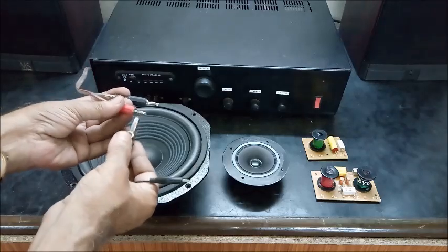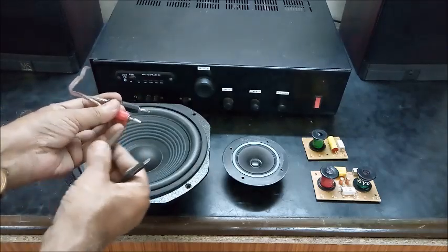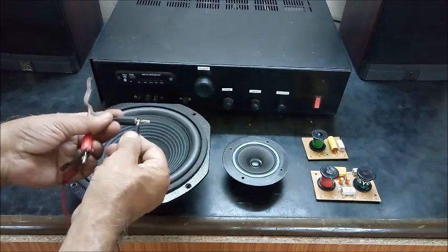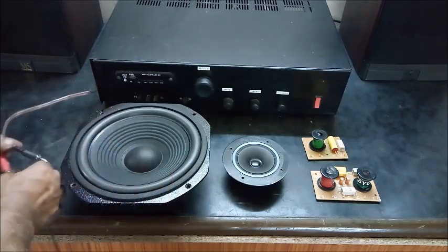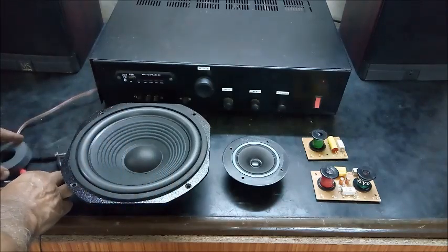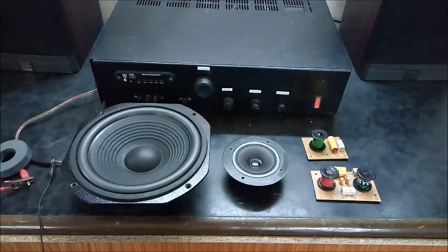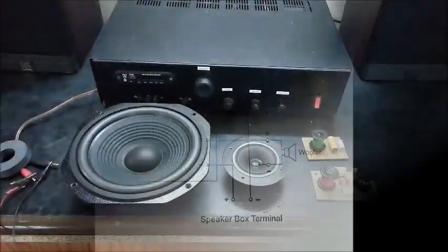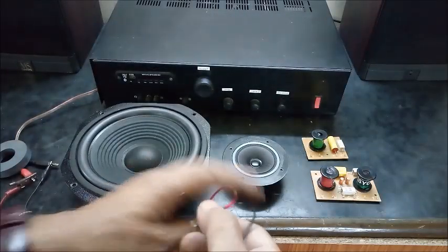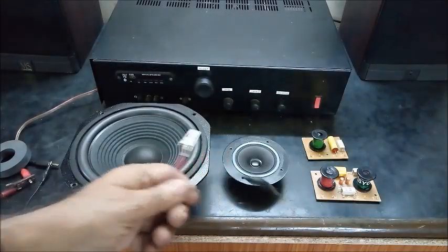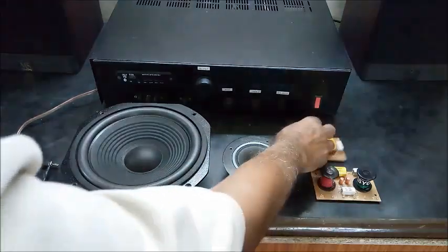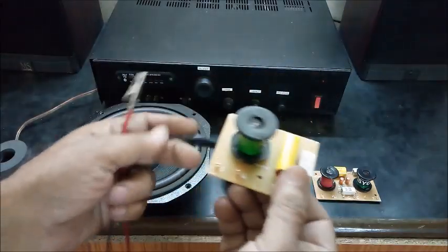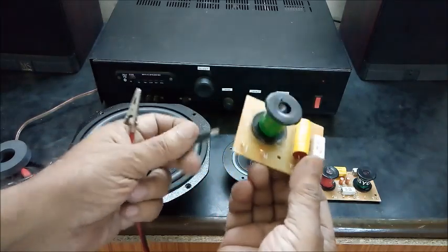Wires with crocodile clips are attached to the speaker cable from the amplifier. This is the connection diagram for the 6 dB network. Positive and negative wires are connected to the input and common point of the network.